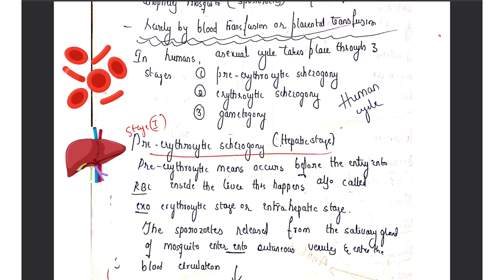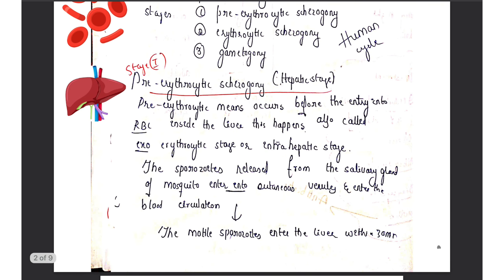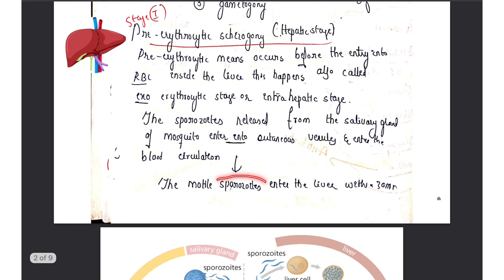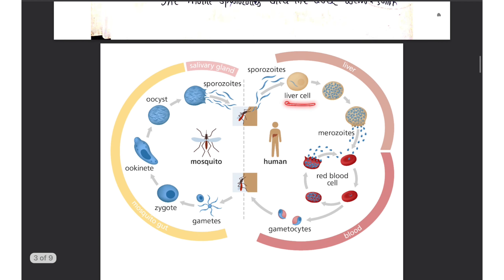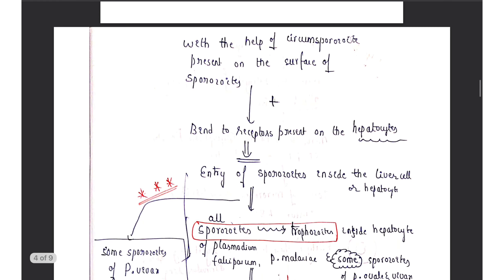What happens in the pre-erythrocytic or hepatic stage? Once the parasite enters your body after a mosquito bite, the sporozoites present in the salivary gland of the mosquito enter your body through the cutaneous venules, then directly enter into the blood circulation. These sporozoites are the infective form of the parasite. They will directly enter the liver within 30 minutes.